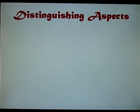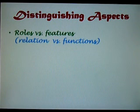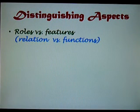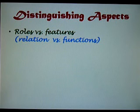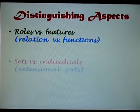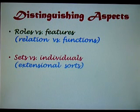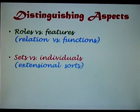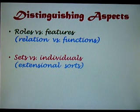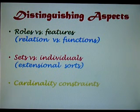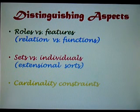There are some distinguishing aspects. In Description Logic we talk about roles, which are relations, and in Order Sortive Feature Logic we talk about features, which are functions. In Description Logic we make a difference between sets and individuals. In OSF Logic there is no difference between sets and individuals — individuals are often referred to as external sorts. And there are some possibilities in Description Logic where one can specify cardinality constraints on these sets.